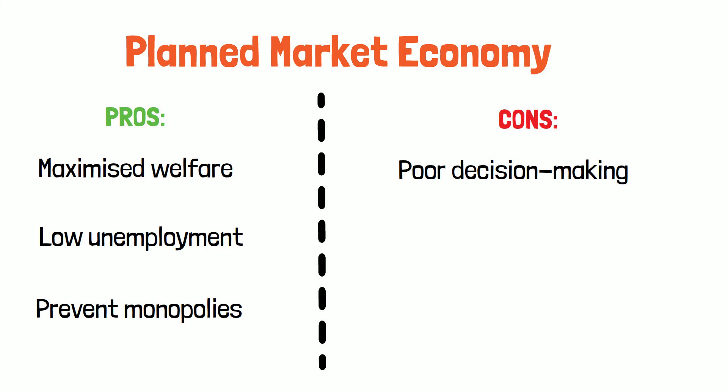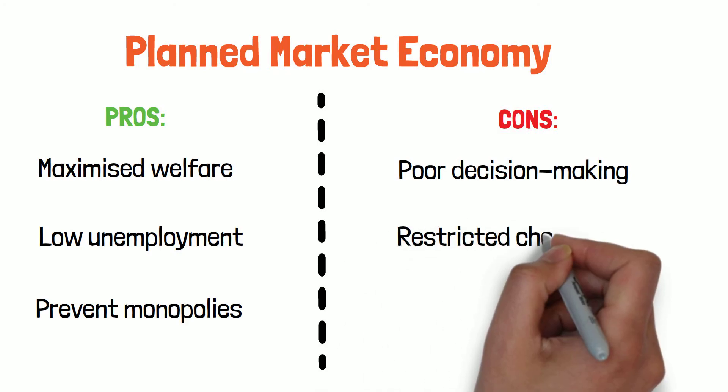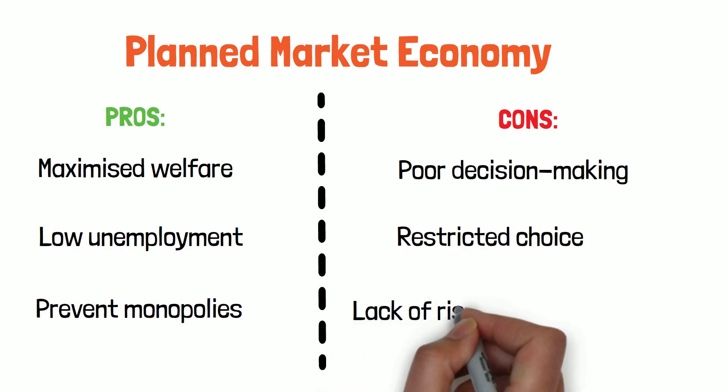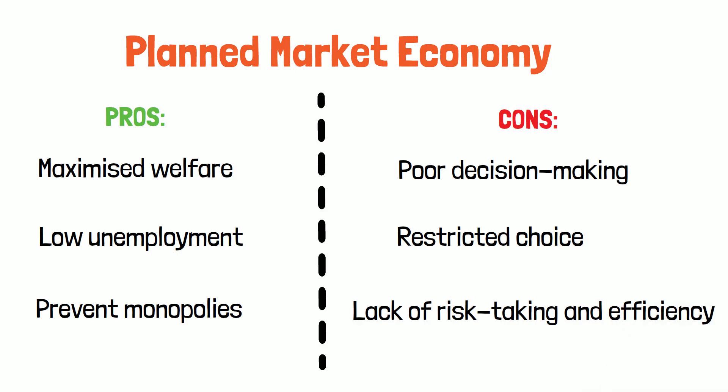Cons of a planned economy: 1. Poor decision making — a lack of information means that governments may make poor and slow decisions about what needs to be produced. 2. Restricted choice — consumers have a limited choice in what they can consume, and firms will make what they are told to make. 3. Lack of risk-taking and efficiency — government-owned firms have no incentive to increase efficiency, take risks, or innovate, because they don't need to make profit.